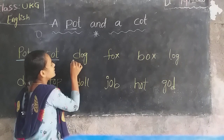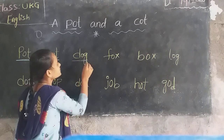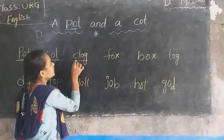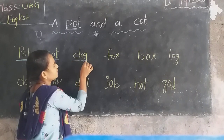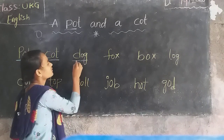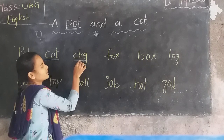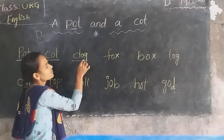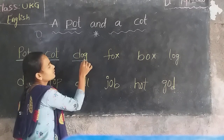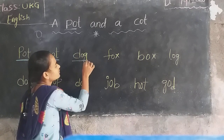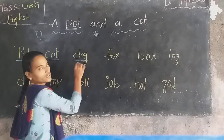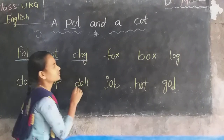Next word, D-O-G, dog. The sound of D is Da. Next, O sound, O. G sound, Ga. D-O-G, dog.